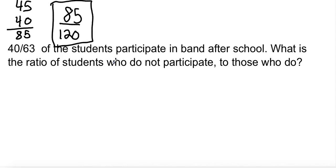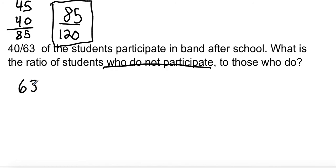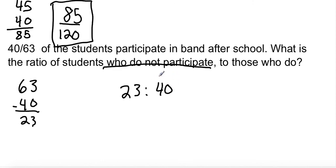Next, the question reads: 40/63 of students participate in band after school. What is the ratio of students who do not participate to those who do? Since this is a fraction, the 40 represents students who go to band and 63 represents the entire school. To find students who do not participate, I subtract: 63 minus 40 equals 23. So the ratio of students who do not participate to those who do is 23 to 40.